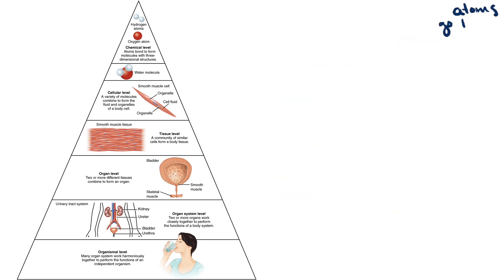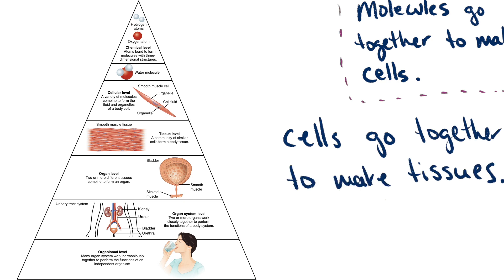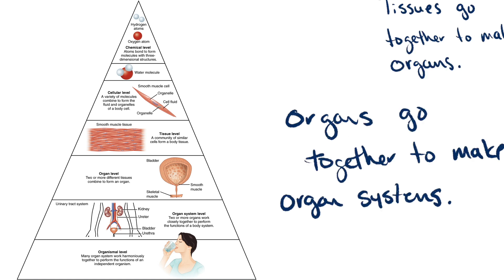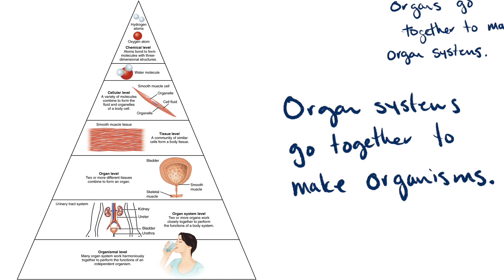At the top, atoms go together to make molecules, then molecules make cells. As you move down further, cells make tissues, tissues make organs, organs make organ systems, and finally organ systems are put together in an organism.